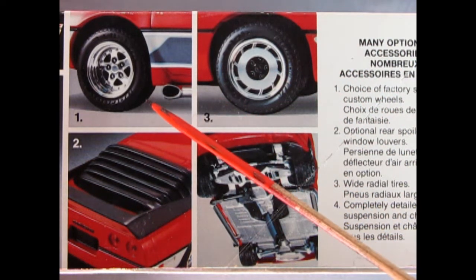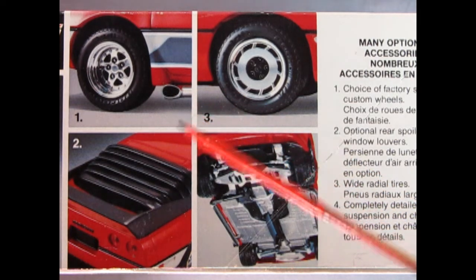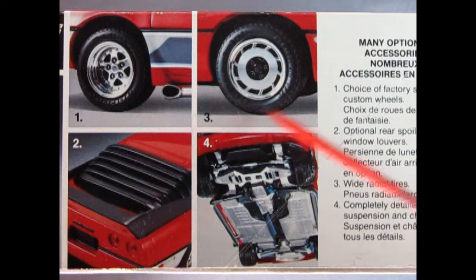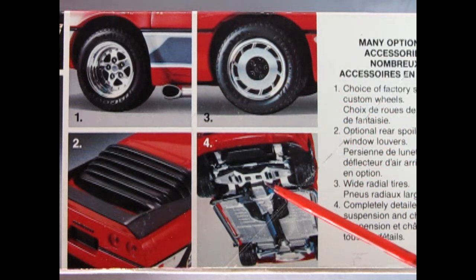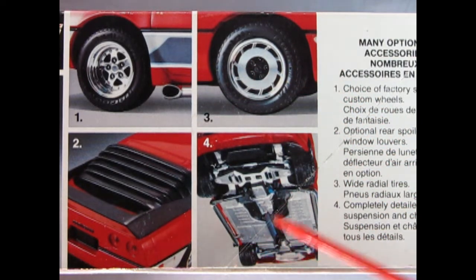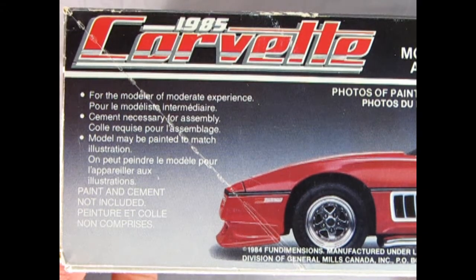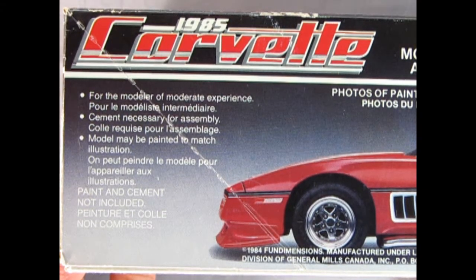These are the many optional accessories that you get in your kit: a choice of factory stock wheels or custom wheels, optional rear spoiler and window louvers, wide radial tires, and a completely detailed suspension and chassis. This model kit was for the modeler of moderate experience. Cement is necessary for assembly.